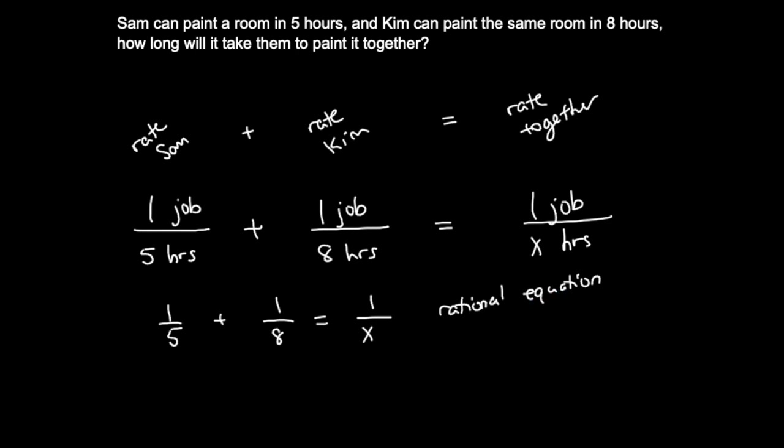Now, if you remember how we solve rational equations, we look for the LCD, right, or the LCM. What is the least common denominator? What is the least common multiple of all of these denominators? So, in this case, 5, 8, and x. 5 times 8 is 40. 40x is my LCD, LCM, right?